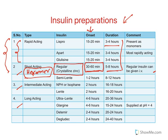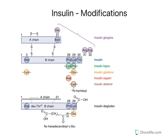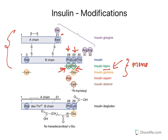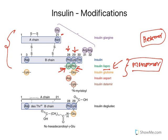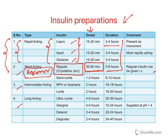To get a better onset of action, certain modifications are carried out: Lispro, Aspart, and Glulisine. In native insulin at the B chain, position 28 has proline and position 29 has lysine. In Lispro, they are swapped — position 28 has lysine and position 29 has proline — which is why it is called Lispro (lysine-proline). In Glulisine, at position 29 glutamic acid replaces lysine, and at position 3 lysine replaces aspartic acid. In Aspart, at position 28 aspartic acid replaces proline. All these modifications cause the insulin to remain as monomers rather than hexamers, so the onset of action is very rapid — within 15 to 20 minutes.